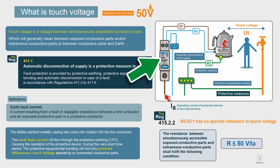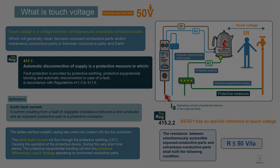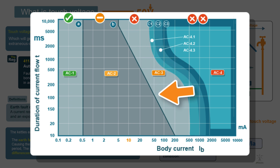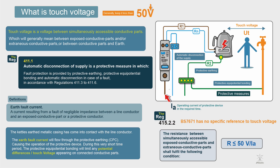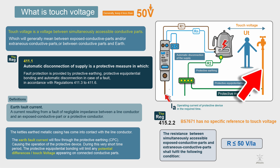Ideally we want the protective device to operate instantaneously — less than 0.1 of a second — because time is really important in limiting the effects of current on a person. The body can withstand a little more current for a very short time. We want it to trip within half a heartbeat so we don't disrupt the heart's rhythm. In this example, there's been a breakdown of the element in the kettle: the line conductor has come into contact with the metal case, and to receive a shock you need a potential difference. The magnitude depends on what else you're touching.